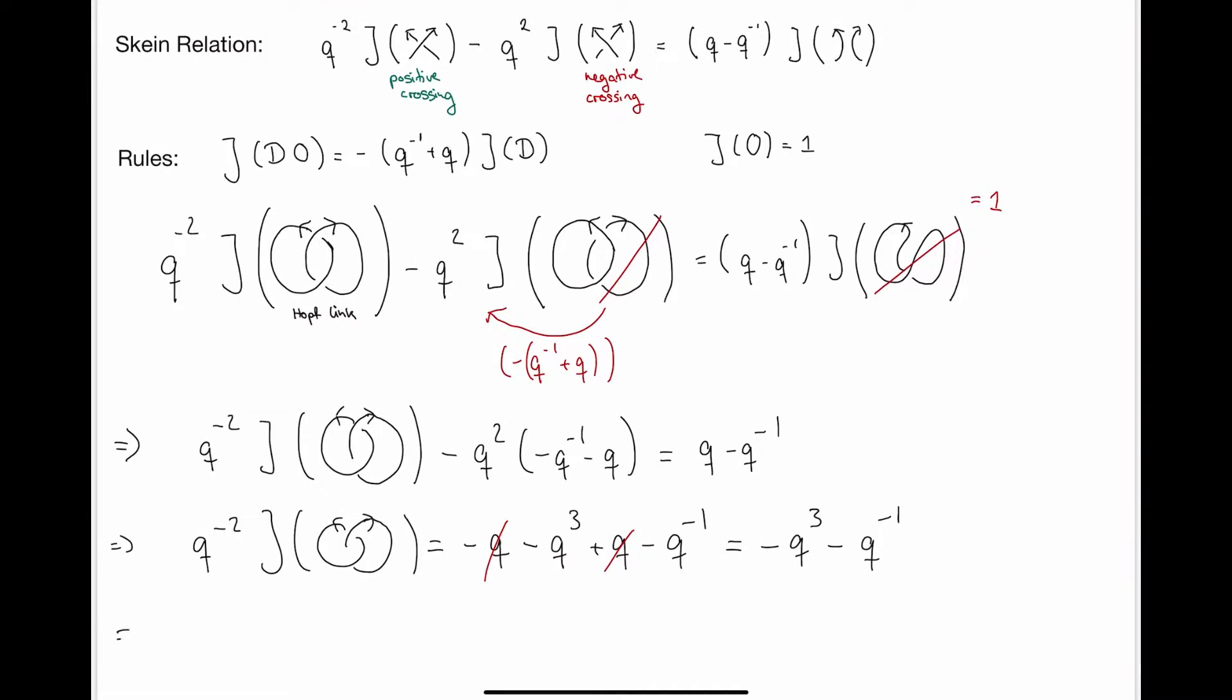And so now the only thing that is left is to multiply times q square. So we get that the Jones polynomial of the Hopf link is equal to minus q to the fifth minus q.